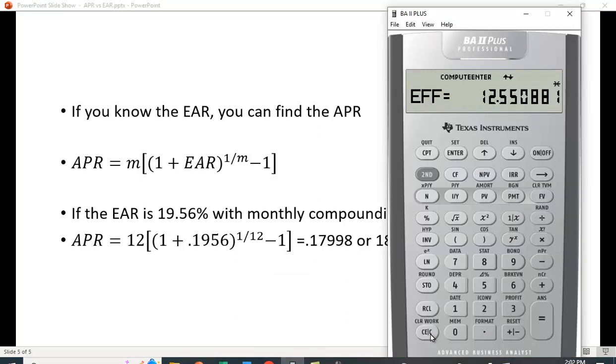We can do that on the calculator using the formula. I'll need 1 over 12, so 1 divided by 12 is 0.0833333. I'll store that by hitting store 1. So 1.1956 raised to the recall 1 power—that's the 1/12th power—minus 1, times 12, and I get 0.17998, which rounds to 18%.